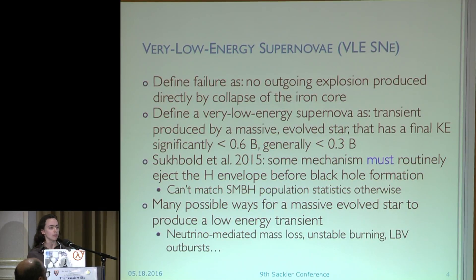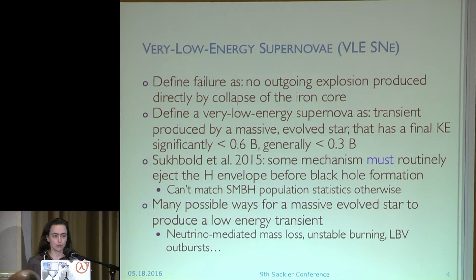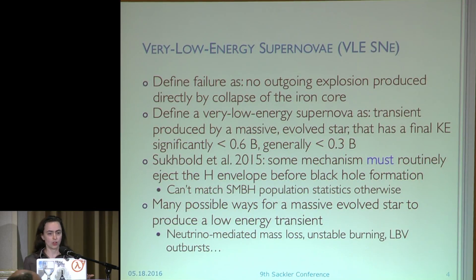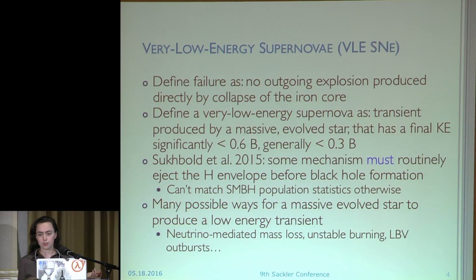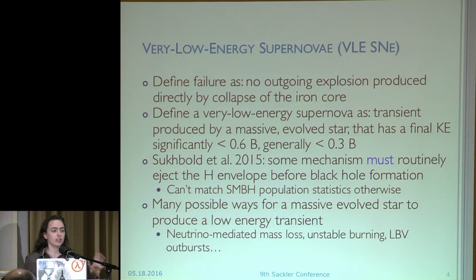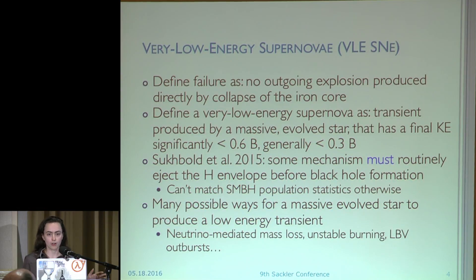In these cases, we have a fair number of core collapses failing, but we know that the hydrogen envelope has to get ejected in a lot of these cases. We were talking about several of these mass loss mechanisms yesterday. It's very hard to fit the stellar mass black hole population statistics unless you have a large fraction of these stars that are collapsing to black holes shedding their hydrogen envelope. You only need about 10 to the 47 ergs to kick off the hydrogen envelope, so there's a range of transients that aren't really big enough to unbind the star, but are big enough to kick off the hydrogen envelope. This is what we classify as very low energy supernovae.